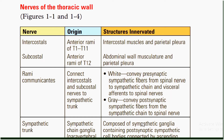Nerves of the thoracic wall include intercostal nerves and subcostal nerves. They originate from anterior rami of T1 to T11, and the subcostal nerve from the anterior rami of T12. Structures innervated include intercostal muscles, parietal pleura, abdominal wall, and musculature.